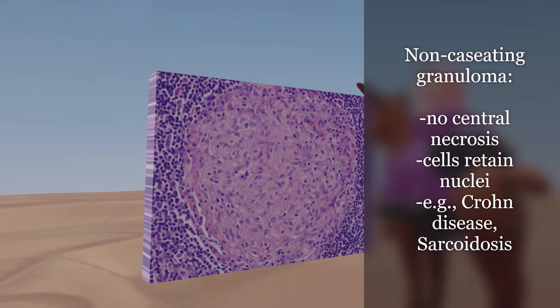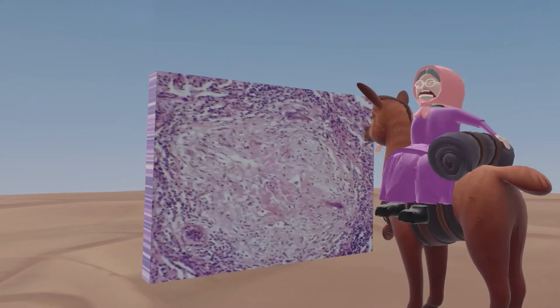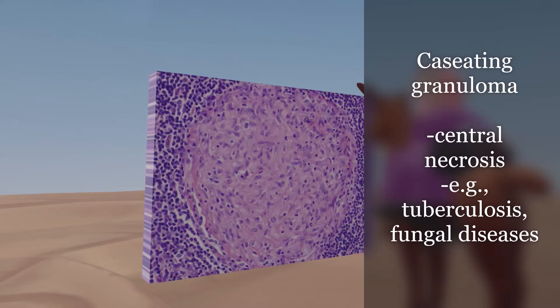Non-caseating granulomas show up in diseases such as Crohn's disease and sarcoidosis. As opposed to a caseating granuloma, which shows central necrosis — those types of granulomas are seen in tuberculosis or fungal diseases.